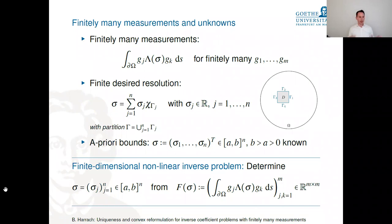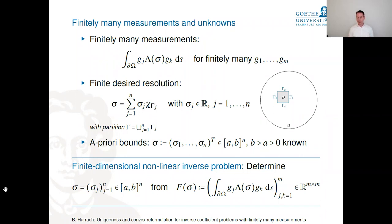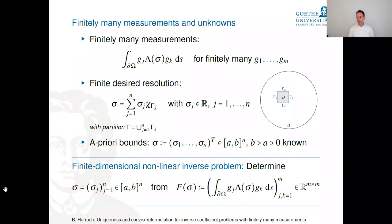For this Robin problem with finitely many measurements, we divide the interface into parts (say four), assume the corrosion coefficient is piecewise constant on each part, and try to reconstruct these unknowns from the Galerkin projection of the Neumann-to-Dirichlet operator into a finite-dimensional space. We also assume known a priori bounds a ≤ σⱼ ≤ b on the corrosion coefficient.